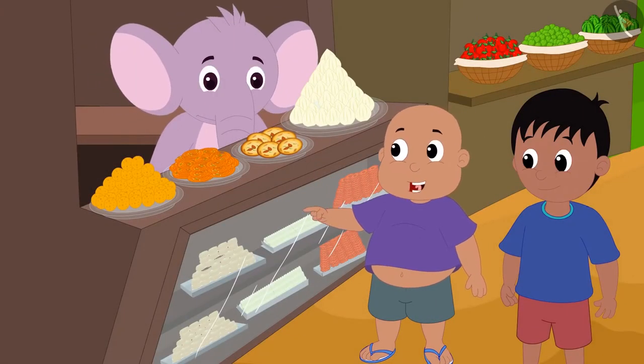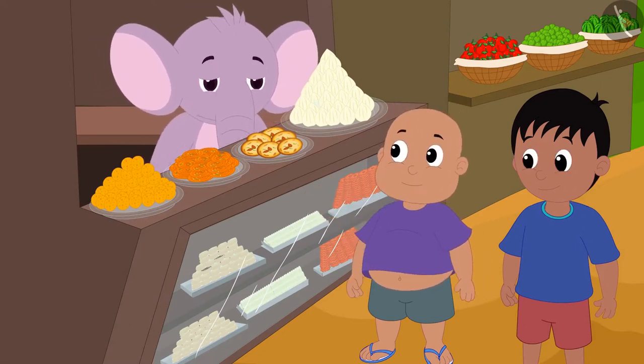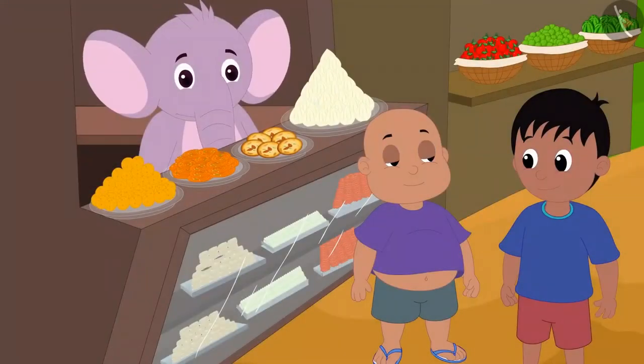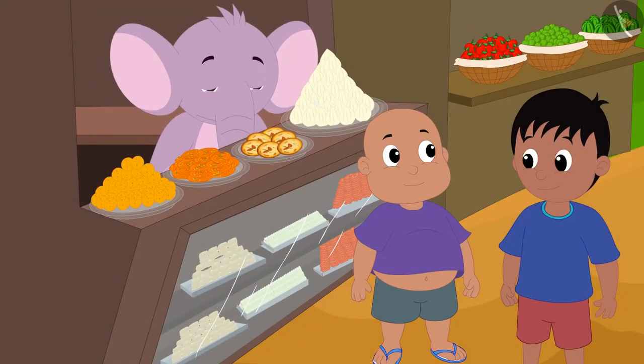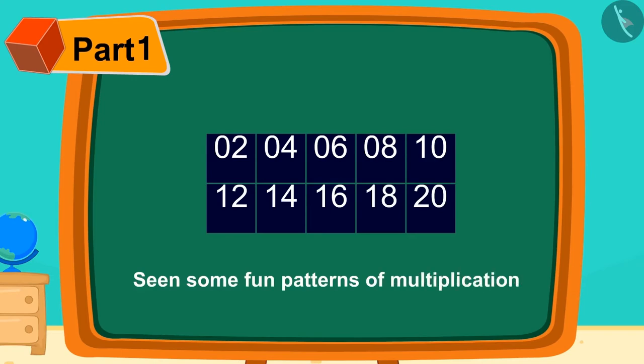Bablu was so happy to learn these unique patterns of memorizing tables. And he also bought Raju 2 more laddus from Appu's shop. Children, in this lesson, we have seen some fun patterns of multiplication.